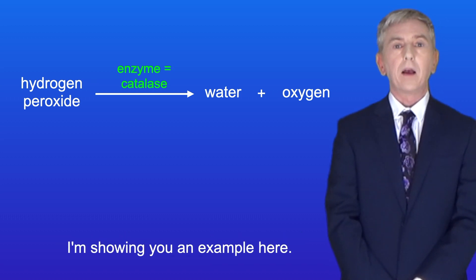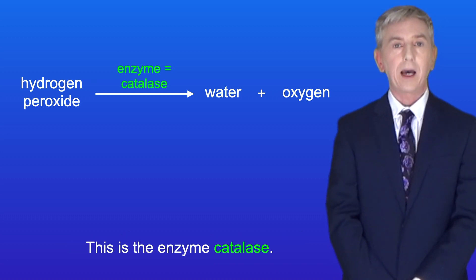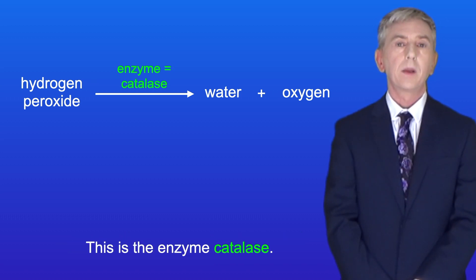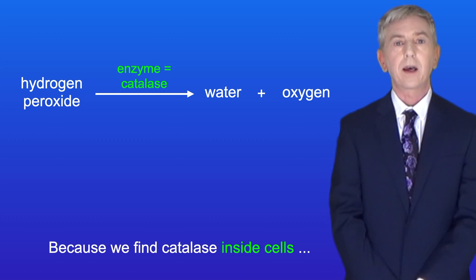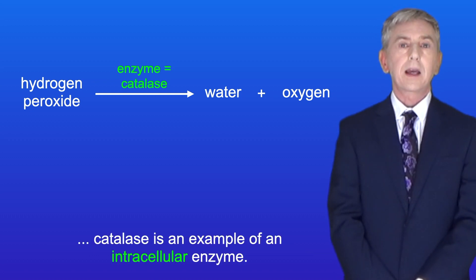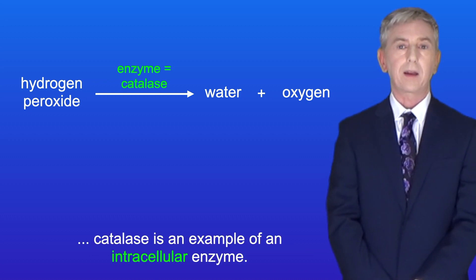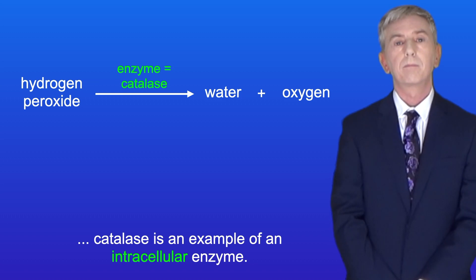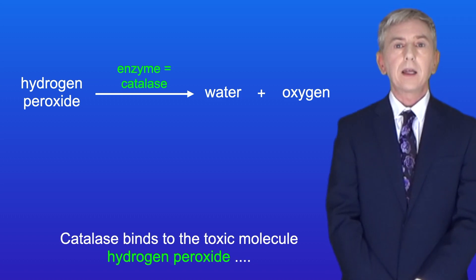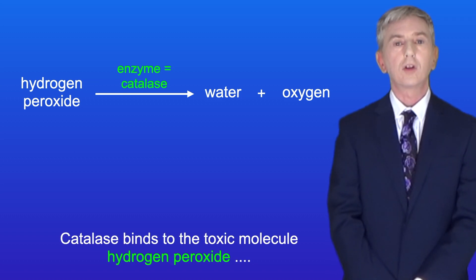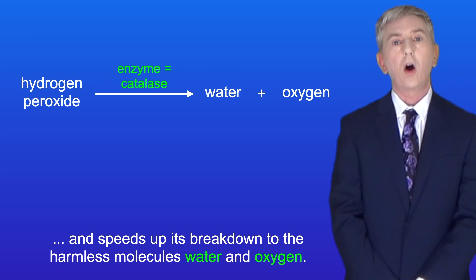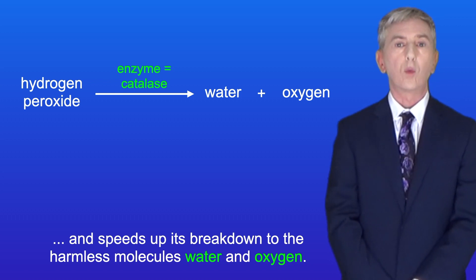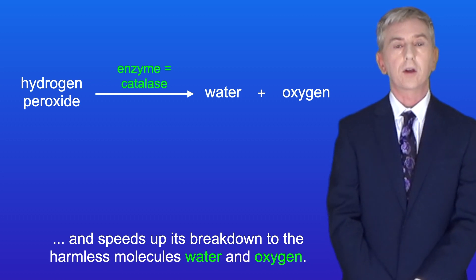I'm showing an example here. This is the enzyme catalase. Because we find catalase inside cells, catalase is an example of an intracellular enzyme. Catalase binds to the toxic molecule hydrogen peroxide and speeds up its breakdown to the harmless molecules water and oxygen.